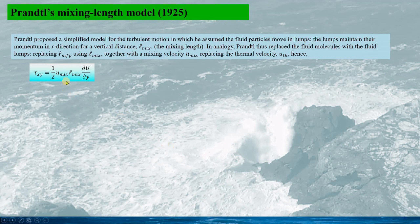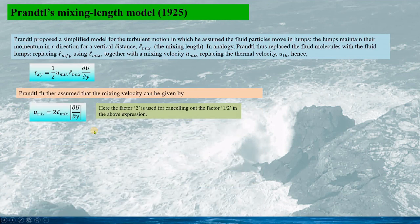Therefore, the shear stress tau_xy is given by this formula. Prandtl further assumed the mixing velocity can be given by u_mix equals to 2L_mix times the absolute of the capital U gradient with regard to y.